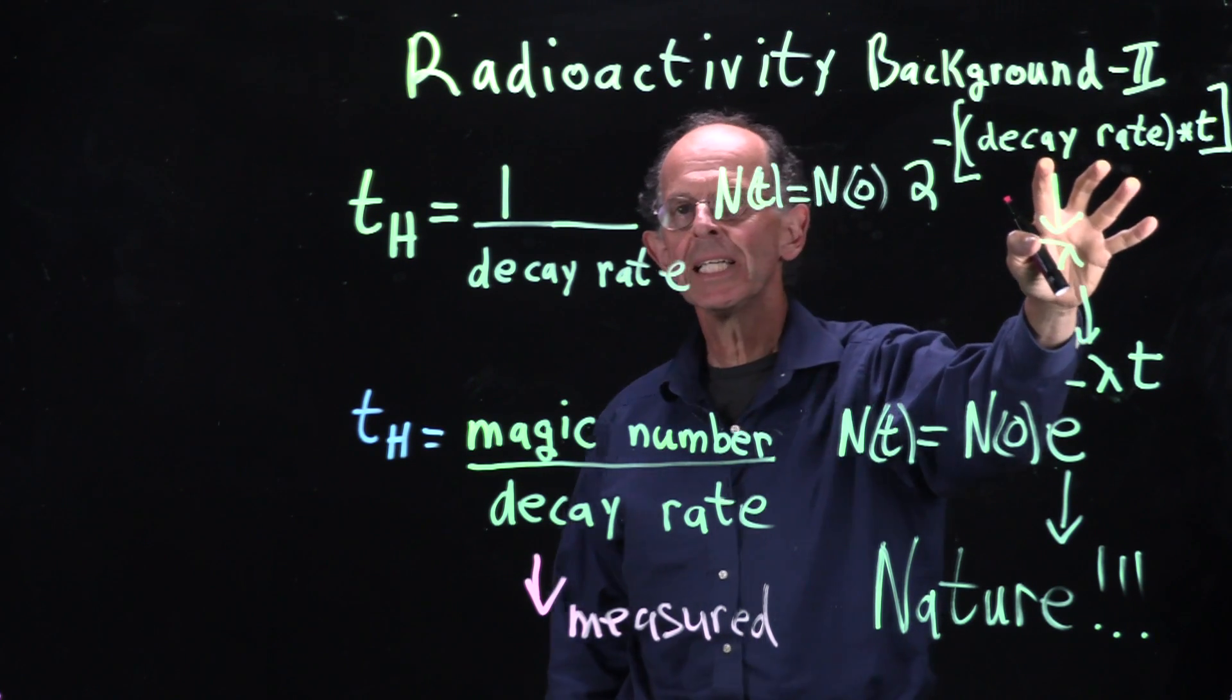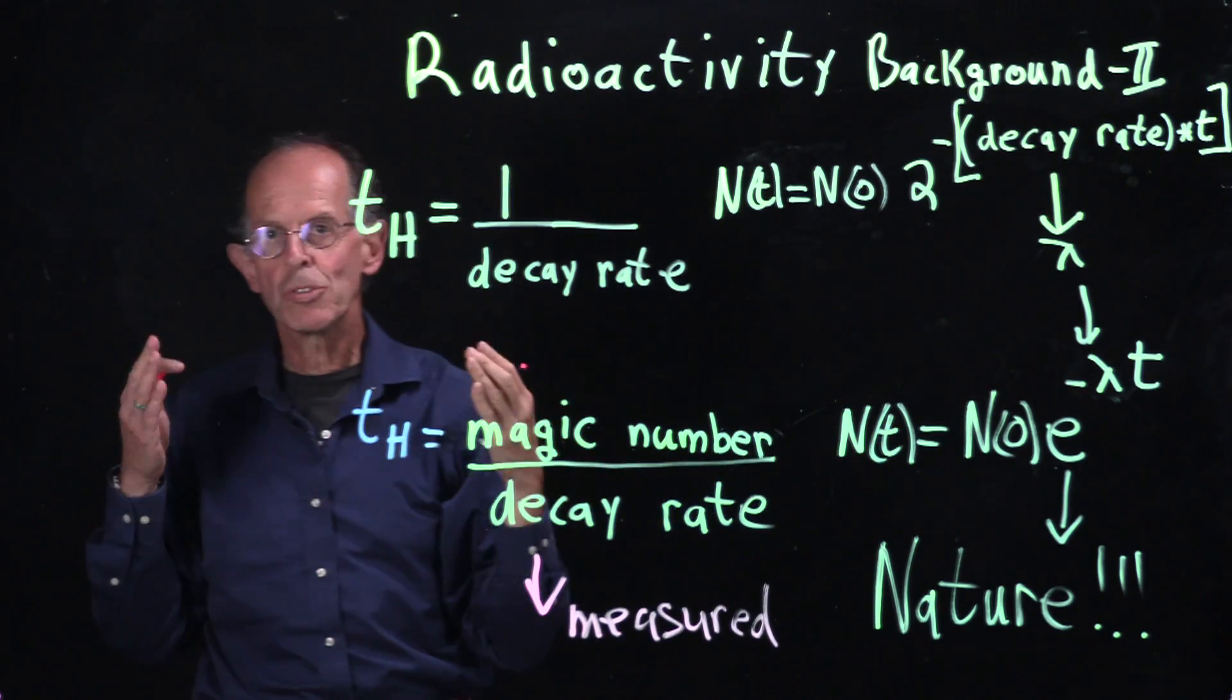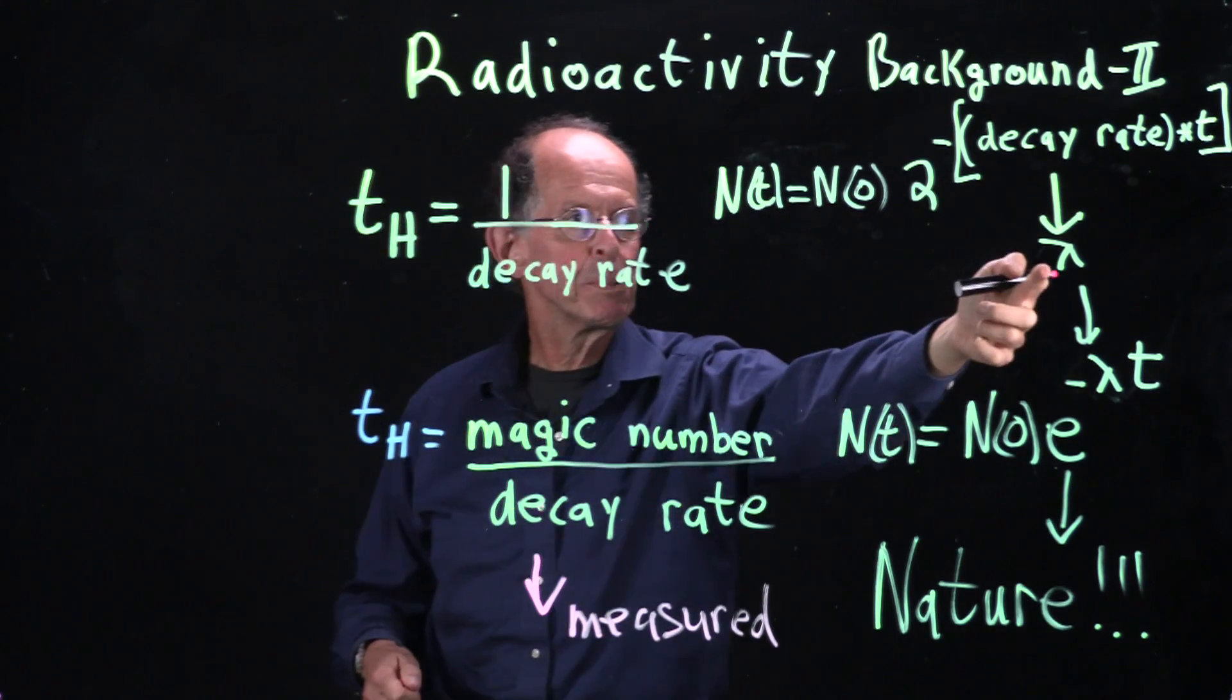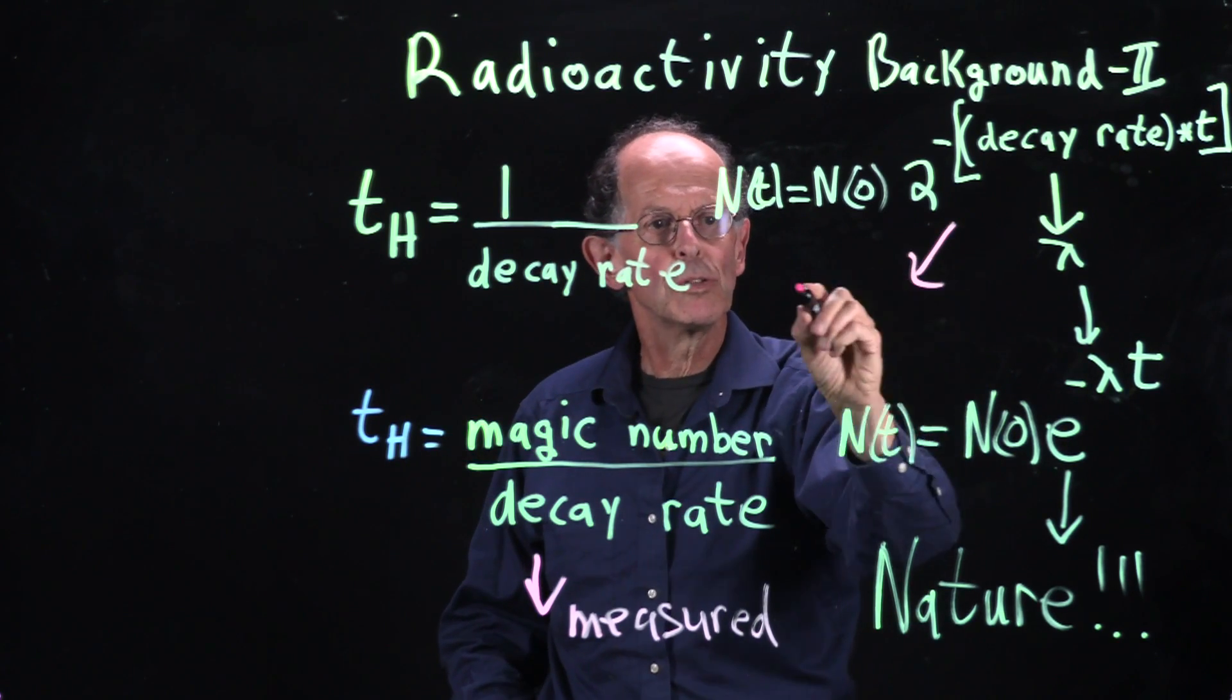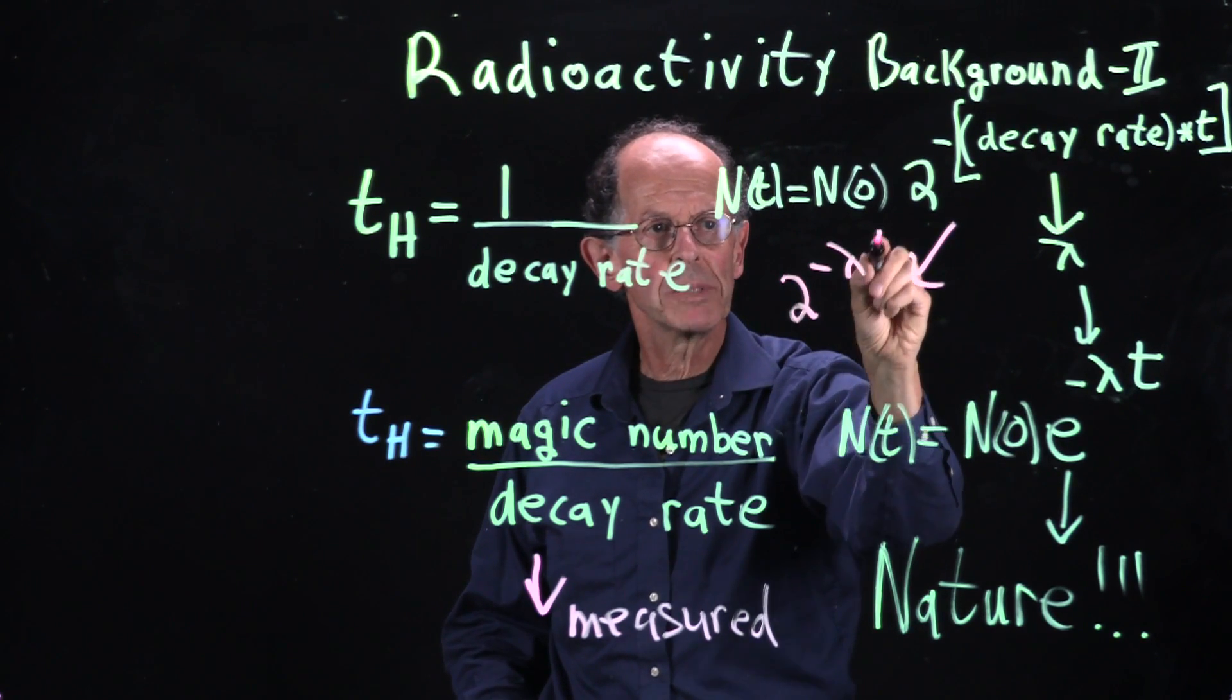Now I can't keep writing decay rate all the time, it's too cumbersome, so I'll put in lambda. So this looks like 2 to the minus lambda t.